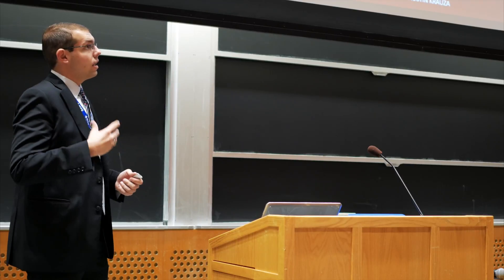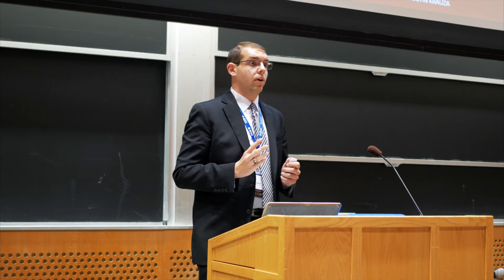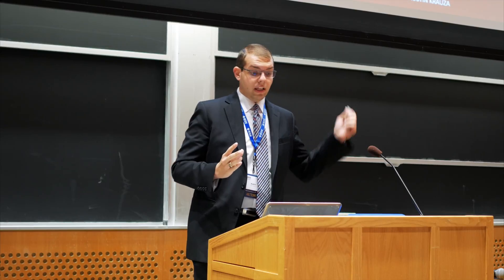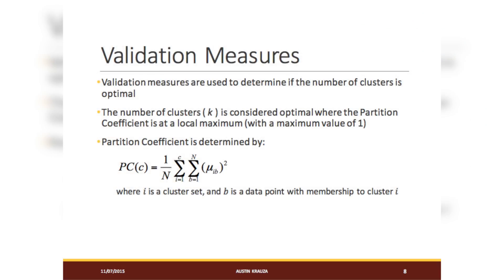Validation measures: when we're running the algorithm we have somewhat of a good idea of what we're doing, but we use validation measures to ensure the number of clusters is correct and not some extreme value. The number of clusters K is considered optimal where the partition coefficient is at a local maximum with a maximum value of one. The partition coefficient is determined using the formula where i is a cluster set and b is a data point with membership to cluster i.